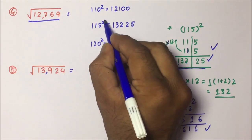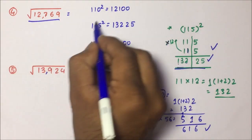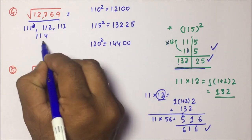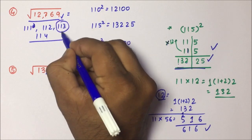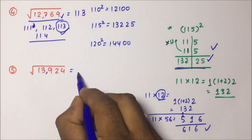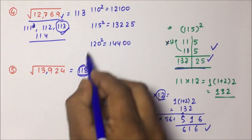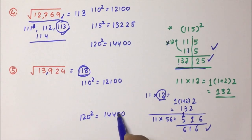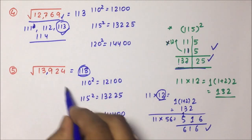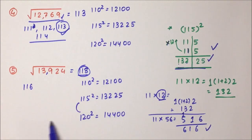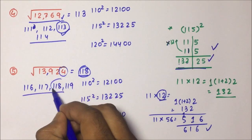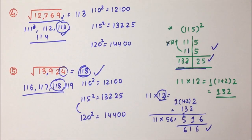Since 12769 is in between 110 squared and 115 squared, the candidates are 111, 112, 113, and 114. Which number squared gives 9 at the end? That is 113. So 113 is the square root of 12769. For 13924: it lies between 115 squared (13225) and 120 squared (14400). The candidates are 116, 117, 118, and 119. Which squared gives 4 at the end? That is 118. So the square root of 13924 is 118.